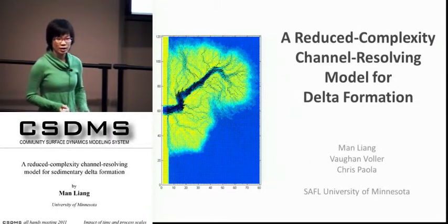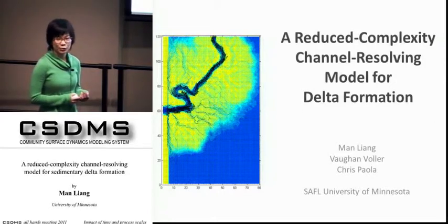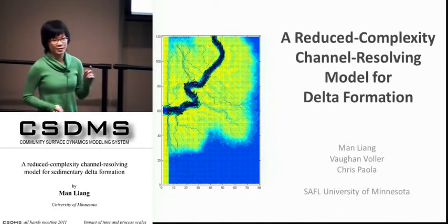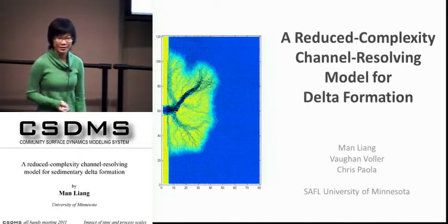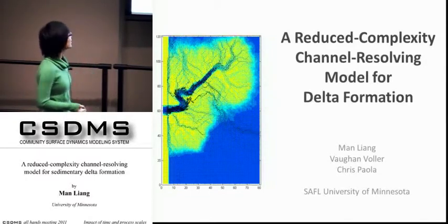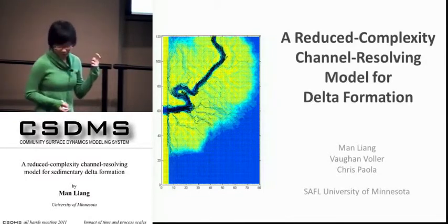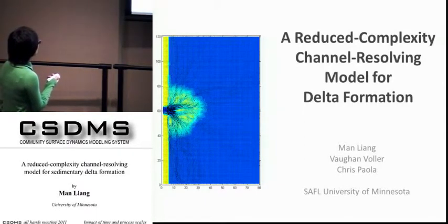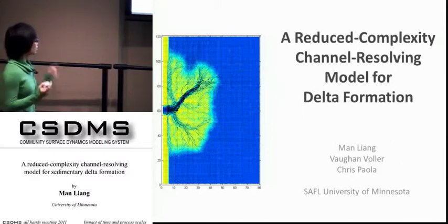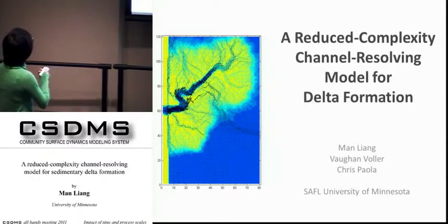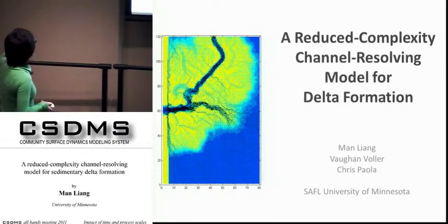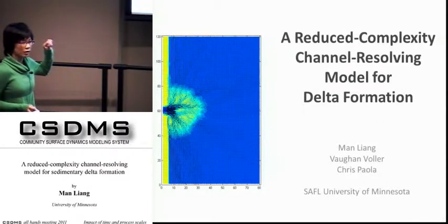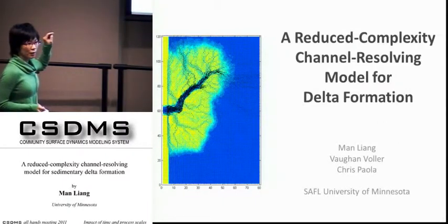I'm trying to model delta with channel networks, and I would call it a 2.5 dimension because it's depth averaged. So just in case the title doesn't say it all, I put my favorite animation from my model results on the left. As you can see, this domain is 4 kilometers in this direction and 6 kilometers in the vertical direction. And the inlet channel is about 300 meters wide, and the number of nodes in this model are 80 times 120.